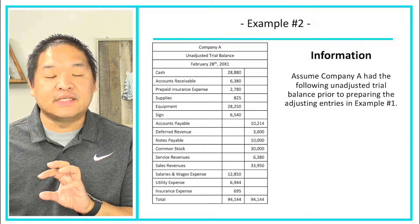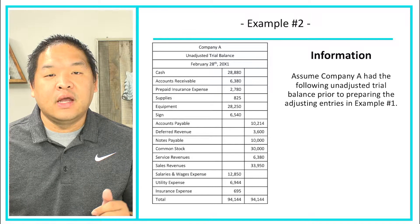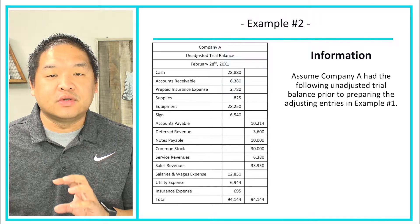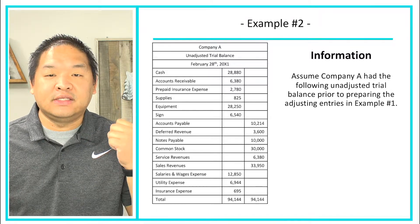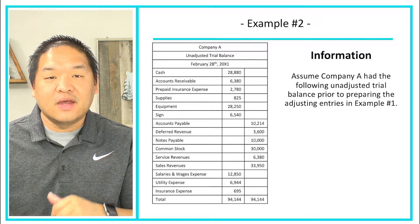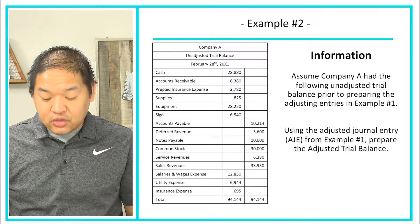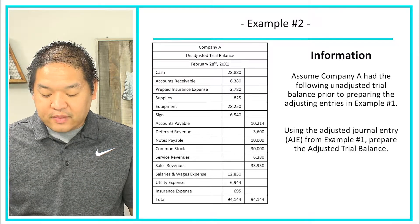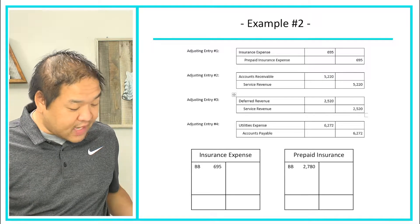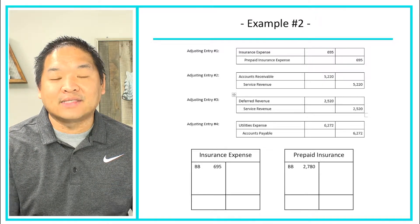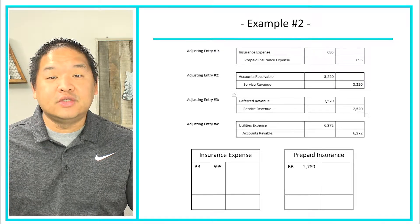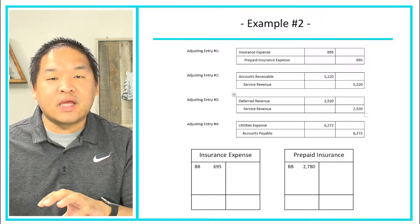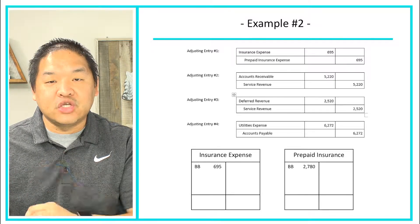This is the only time you're going to have this trial balance available as we go through the next couple of slides, so you may want to take a picture of it for reference, since all the numbers we're going to use come from here and the adjusting entries from example one. Using the adjusted journal entries — we call them AJEs — from example one, we're going to prepare the adjusted trial balance. Once we do the adjusting journal entries, we post them to the T-accounts, and then use those accumulated numbers to prepare the adjusted trial balance.